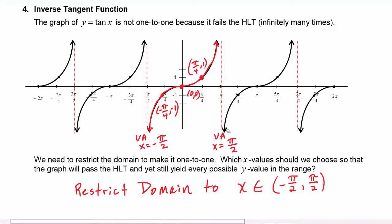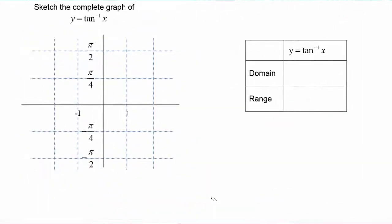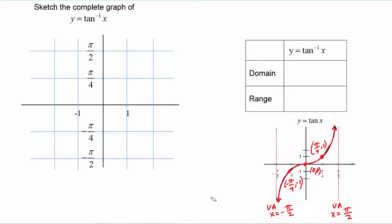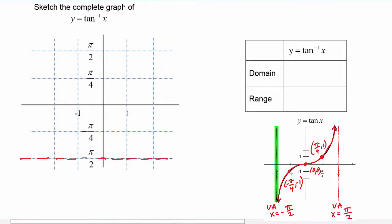We can use these five key values to create our graph of y equals tangent inverse of x. Remember that x becomes y and y becomes x in the inverse function. So because our graph of tangent has a vertical asymptote at x equals negative pi over two, that means the graph of tangent inverse will have a horizontal asymptote at y equals negative pi over two. Remember, x becomes y, so a vertical asymptote becomes a horizontal asymptote.